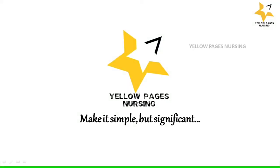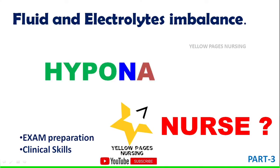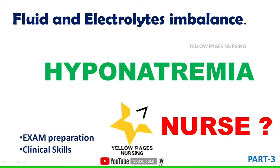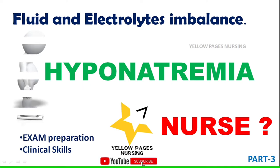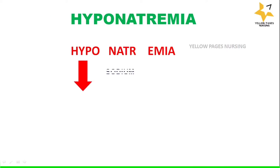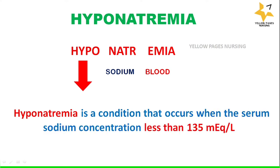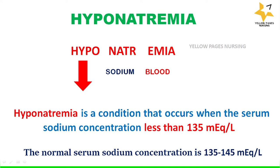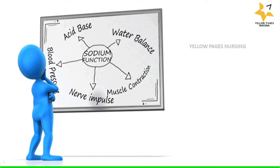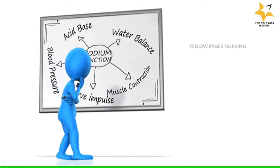Hello everyone, welcome to Yellow Pages Nursing. This video is a continuation of the fluid and electrolyte imbalance session, with the main topic on hyponatremia. Hyponatremia, as the name defines, is a decreased sodium level in the blood. Normal serum sodium level is 135 to 145 milliequivalents per liter. Hyponatremia is a condition that occurs when the serum sodium concentration falls below 135 milliequivalents per liter.